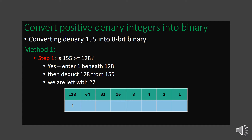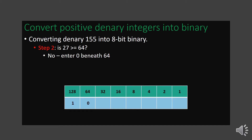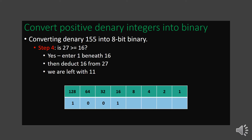The remainder 27 is taken to step 2 and compared with 64. Since 27 is not greater than or equal to 64, we put a 0 in the box below 64. Then we compare 27 with 32 — again not greater than or equal — so we put 0 below 32. Now comparing 27 with 16: 27 is greater than 16, so we put a 1 below 16 and subtract 16 from 27, giving a remainder of 11.